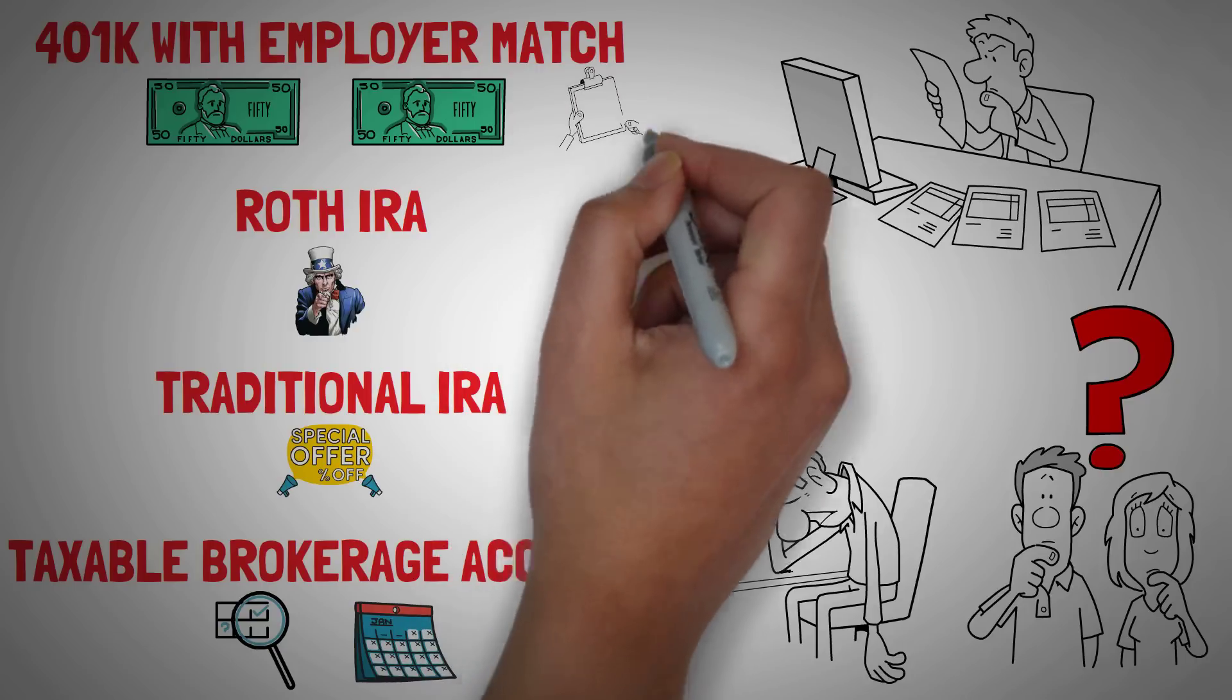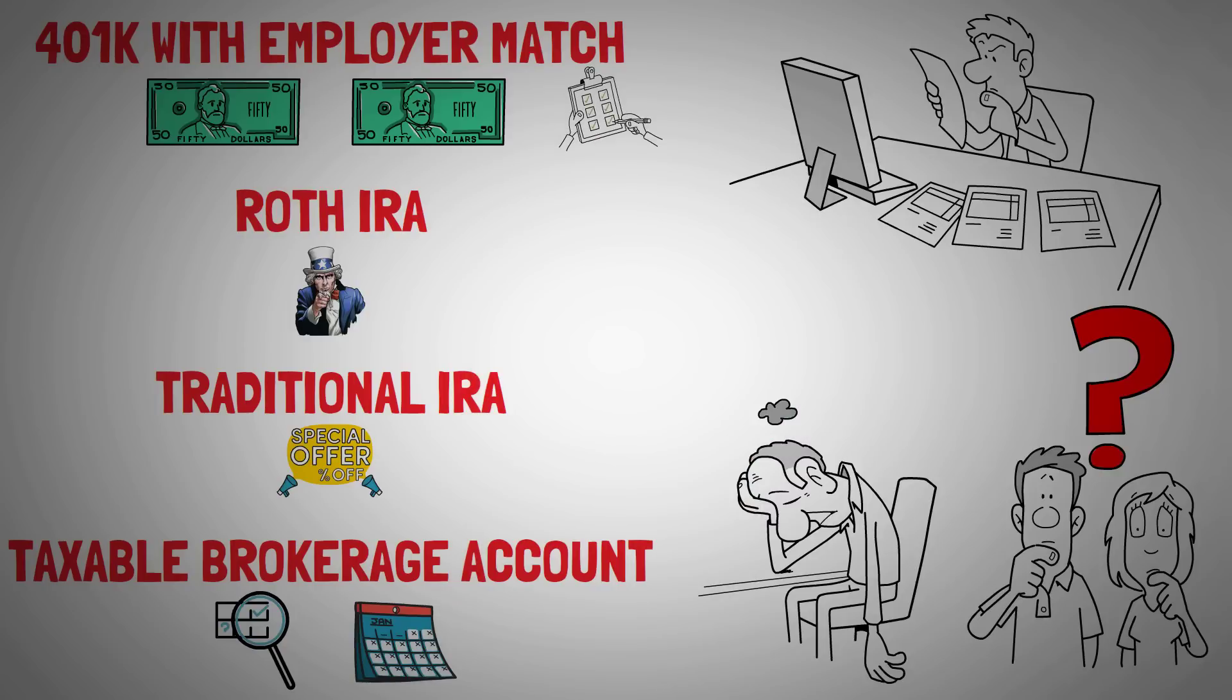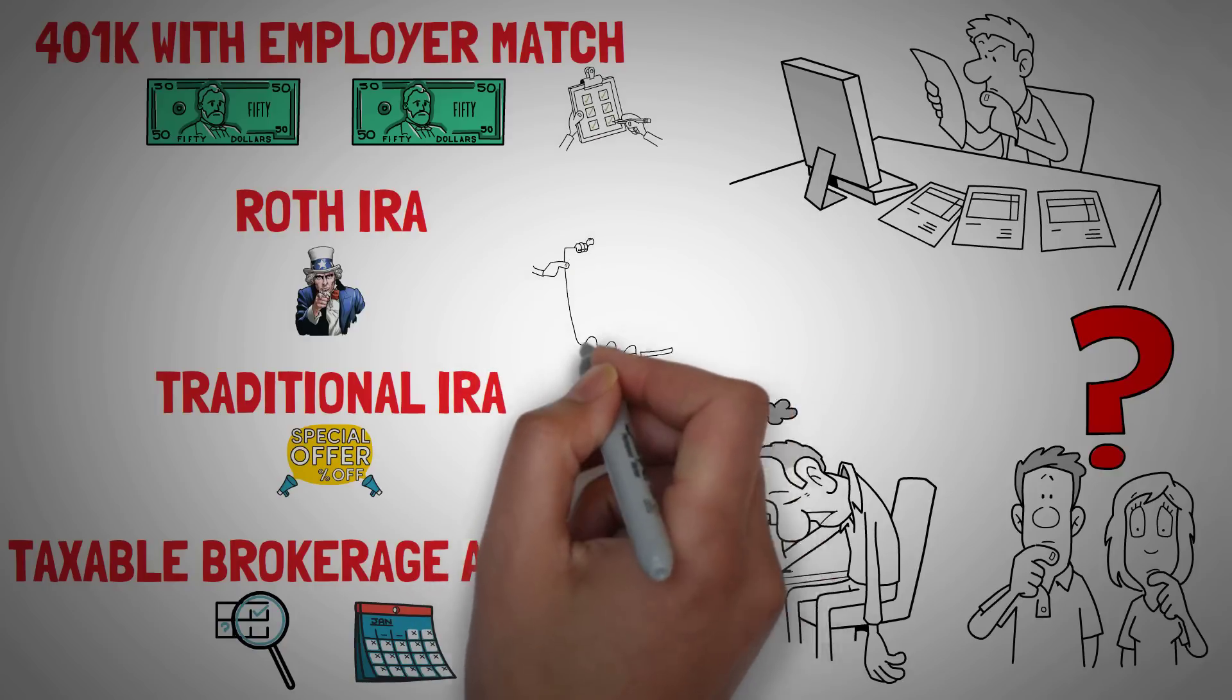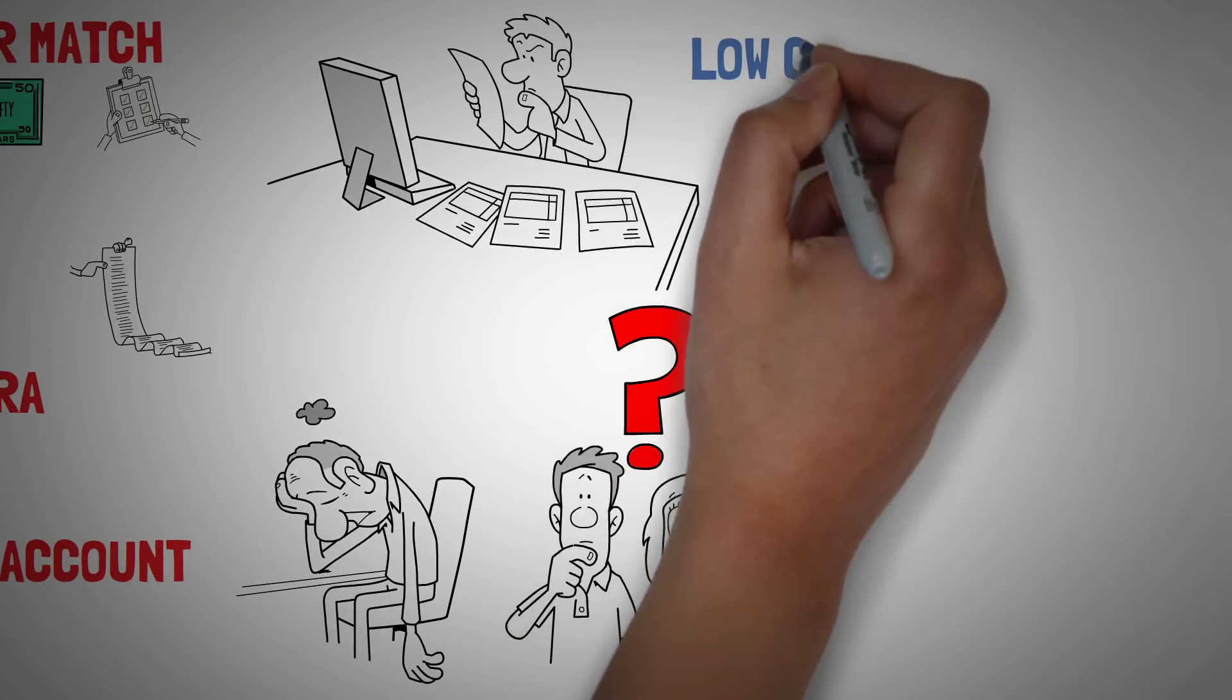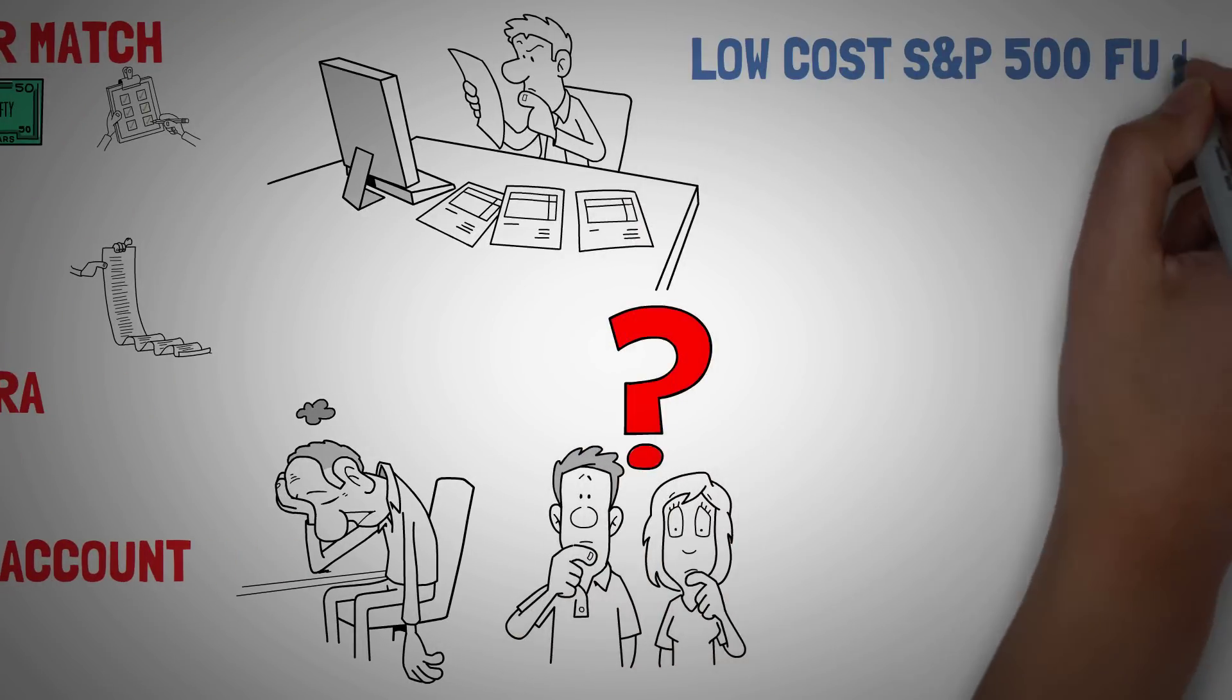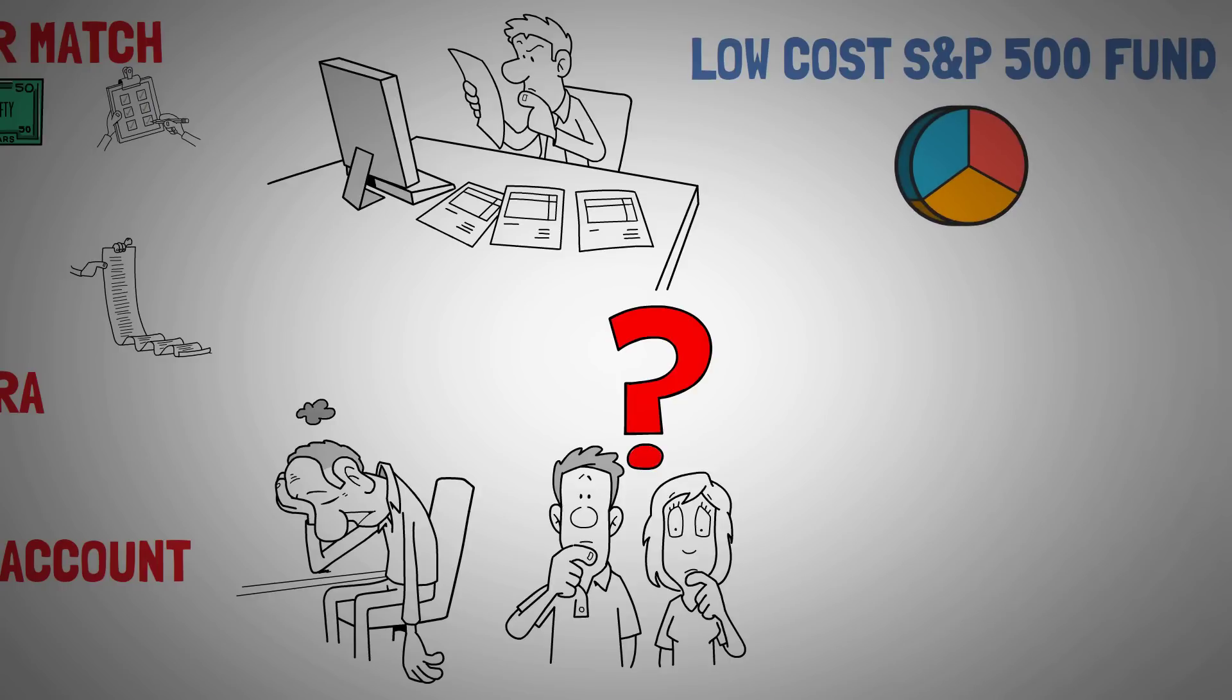With a 401k, your employer will have a list of choices from which you can choose, such as an S&P 500 index fund. With an IRA, you have a much larger selection of investments, which is a huge advantage to these accounts. You can basically choose any stock or fund. It's hard to go wrong with a low-cost S&P 500 fund because it provides immediate diversification combined with growth and stability.